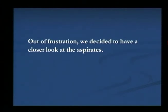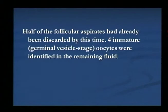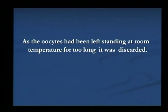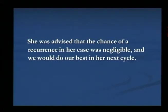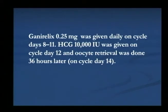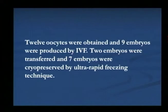Follicles were present and estradiol correlated well; progesterone level was ideal. On closer inspection, half of the follicular fluid had already been discarded. The embryologist later found some early germinal vesicle stage oocytes in the fluid — with a very scanty amount of cumulus cells, making them almost impossible to identify. The fluid had to be discarded and the patient was counselled and posted for the next cycle. Four months later, she was given HMG 225 units for 3 to 9 consecutive days and an antagonist cycle was used. HCG was given and oocyte retrieval was done 36 hours later — 12 oocytes were obtained, 9 embryos produced by IVF, 2 embryos transferred, and 7 frozen.